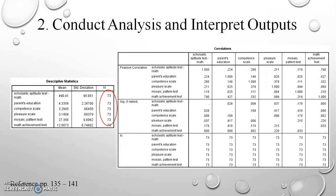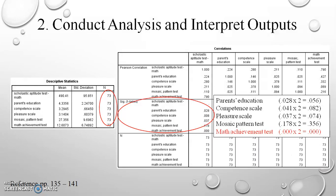The correlations matrix provides basic information about the statistical significance of correlations between the predictor variables and the dependent variable. Because the significance shown is for a one-tailed test, we multiply each value by two to get the two-tailed result. We find that the only predictor variable with a p-value less than 0.05 is math achievement, meaning it is correlated with the scholastic aptitude test.